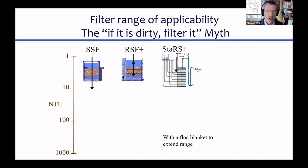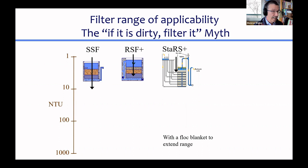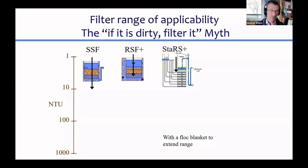Both rapid sand and STARS filters are really happy when turbidity is under 1 NTU — meaning water so clear you wouldn't see anything with your eyes. In all cases, we can extend the range of these filters by adding additional upstream treatment processes.